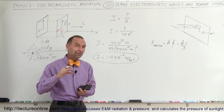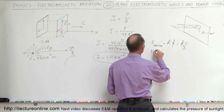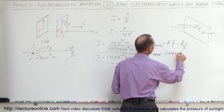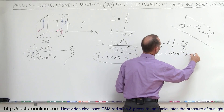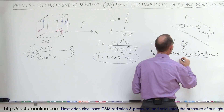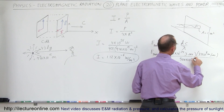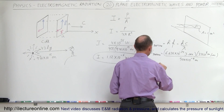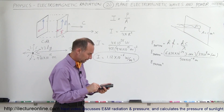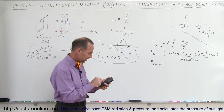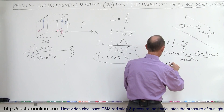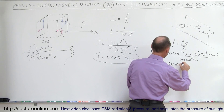Each photon contains that much energy, and for visible light the wavelength is around 500 nanometers. The energy of a photon is equal to 6.626 times 10 to the minus 34 joule-seconds, times the speed of light, 3 times 10 to the 8 meters per second, divided by the wavelength of visible light, about 500 times 10 to the minus 9 meters. Calculating that gives us 3.98 times 10 to the minus 19 joules per photon.